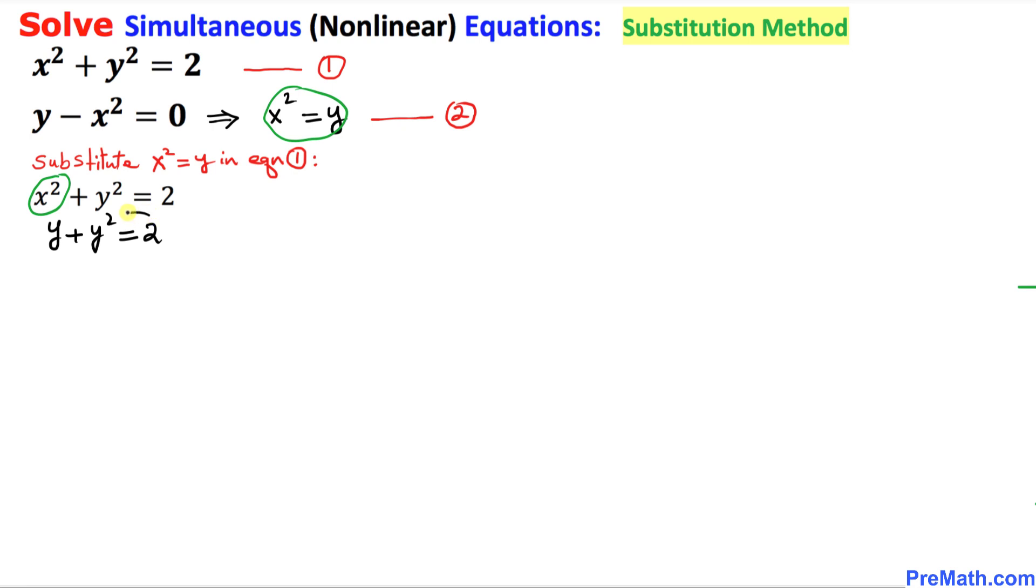If I bring this 2 on the left hand side, we are going to have y squared plus y minus 2 equal to 0 which is a quadratic equation and that can easily be factored out.